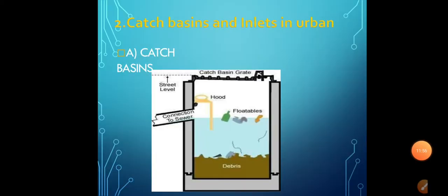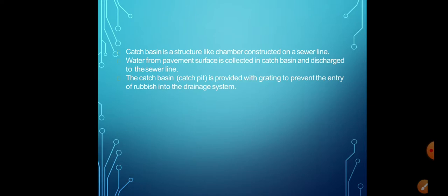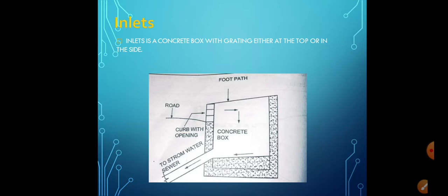For urban roads, water may be collected in catch pits at suitable intervals and led through underground drainage pipes. A typical catch pit with grating prevents entry of rubbish into the drainage system. Drainage of surface is also important in hilly roads, where footpaths and slopes are provided to drain water inside.